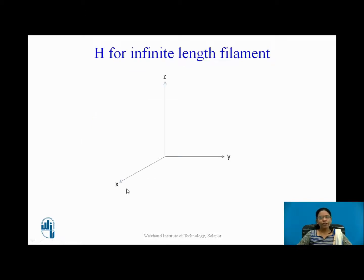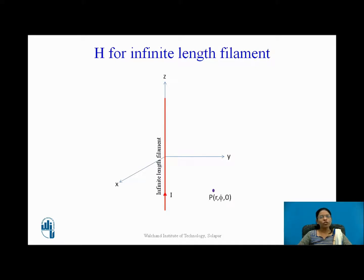To find H for an infinite length filament, I will consider the x, y, z axis three-dimensional coordinate system. Let us assume an infinite length filament along the z-axis with current I flowing through it. Our intention is to find the magnetic field at point P in the x-y plane.